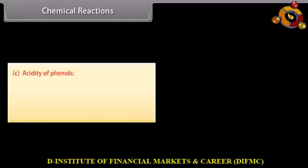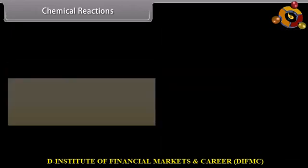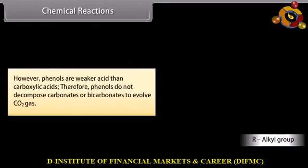Phenols are stronger acids than alcohols, as phenols turn blue litmus red and react with alkali. However, phenols are weaker acids than carboxylic acids. Therefore, phenols do not decompose carbonates or bicarbonates to evolve carbon dioxide gas.